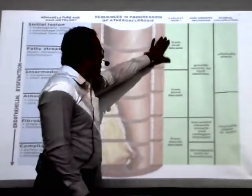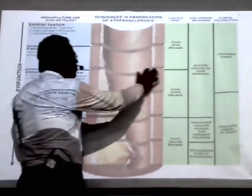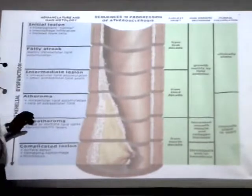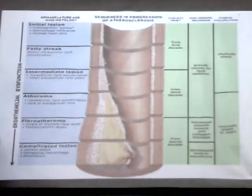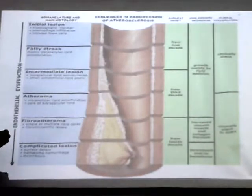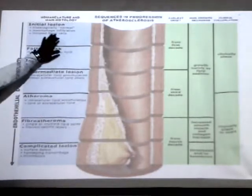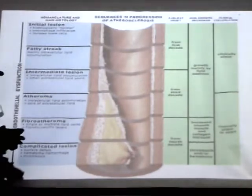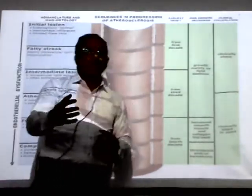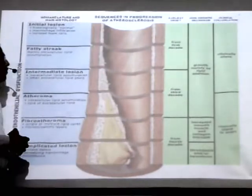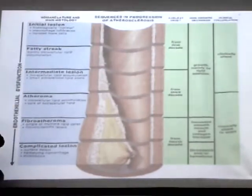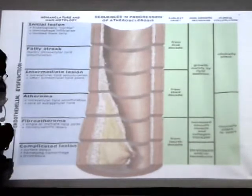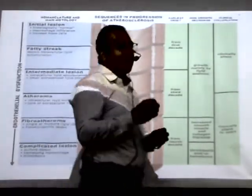In the very first decade of life, the artery is quite normal in structure. There is an initial lesion — this is a site where atherosclerosis might develop in the coming future. There are some isolated foam cells at this stage; we will come to the definition and formation of foam cells later.